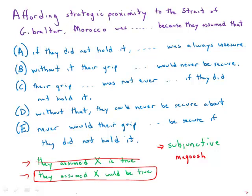Scanning through the answer choices, we find the correct uses of the subjunctive: would, could, would. Those are correct. In A, we have 'was always insecure' — that's awkward and the wrong verb tense, so that's out. 'Was not ever' is also out. So we've eliminated A and C.